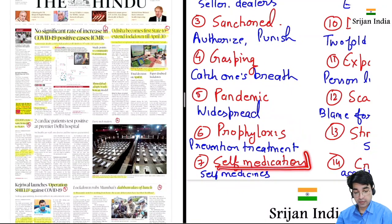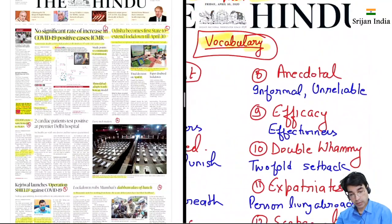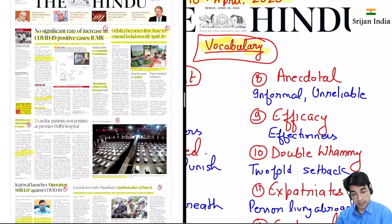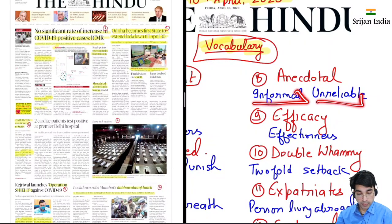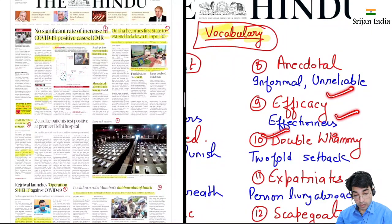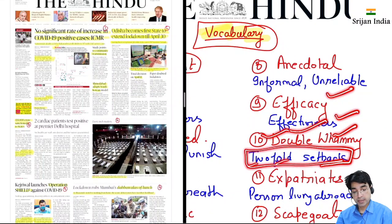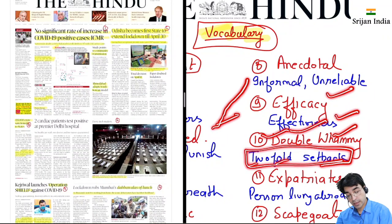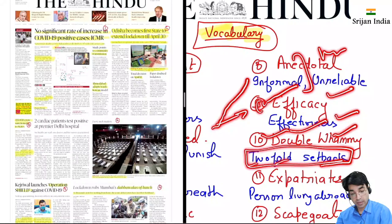Then 'self-medication' matlab khud ka upchar karna. Then 'anecdotal' matlab informal aur unreliable. 'Efficacy' ka matlab hota hai effectiveness. 'Double whammy' means two-fold setback — economy waise hi nahin achha ja raha tha aur yeh COVID-19 aur aa gaya, so this is double whammy.